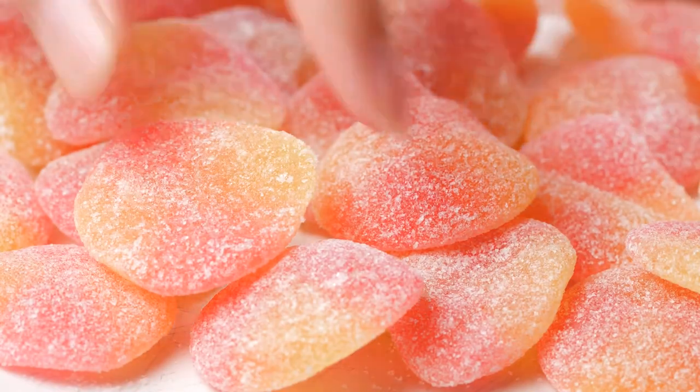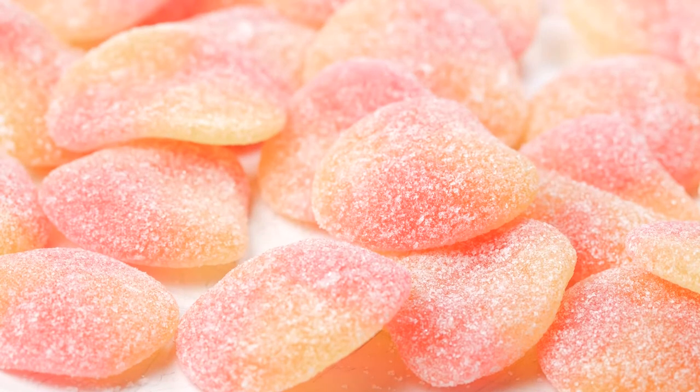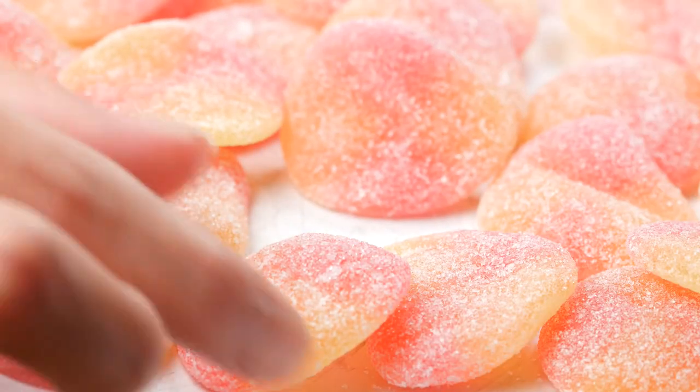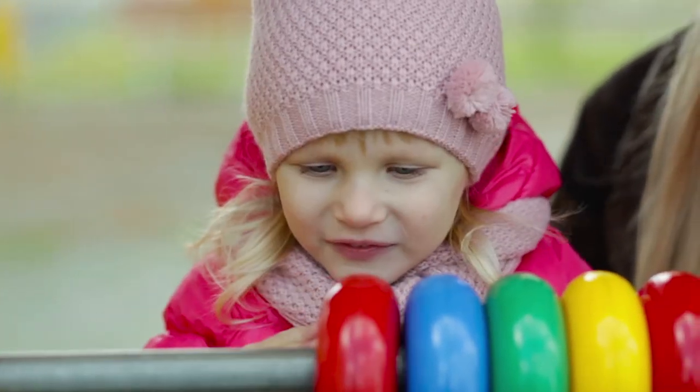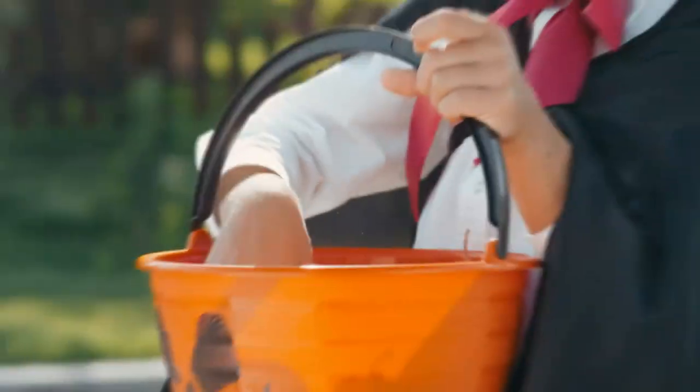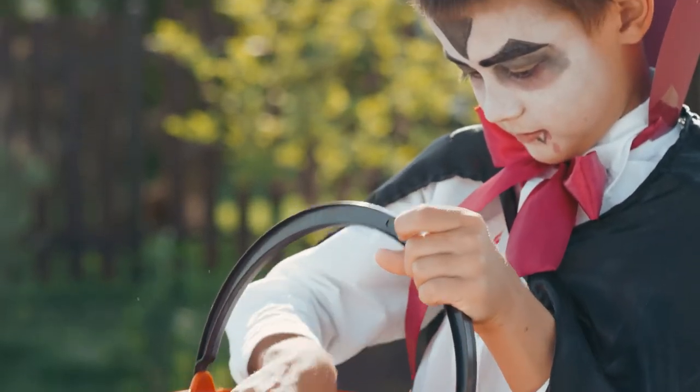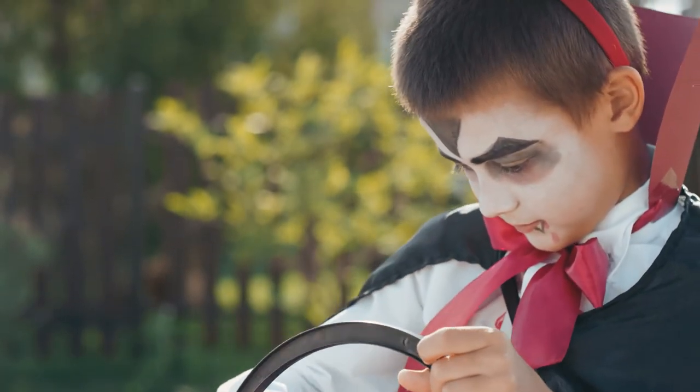After you are done dividing your candy, do you each count your pile to make sure you both have the same number? Well, when you count those candies, you are doing addition. You are adding the candies together to find out how many you have total.